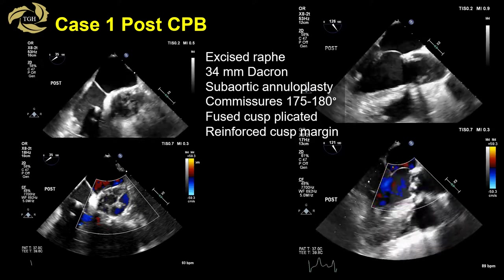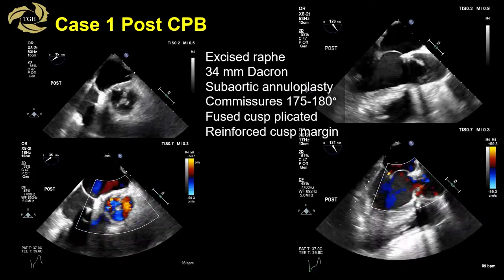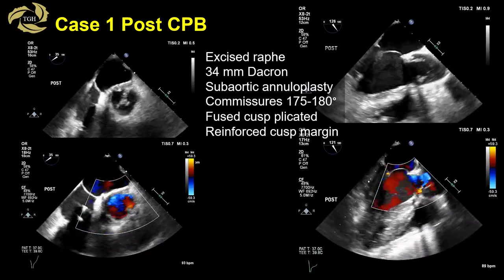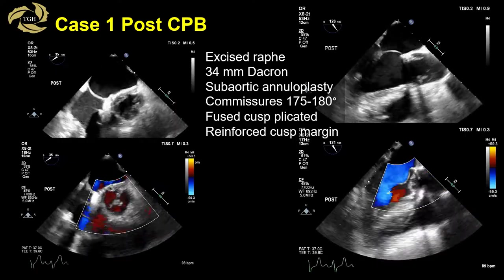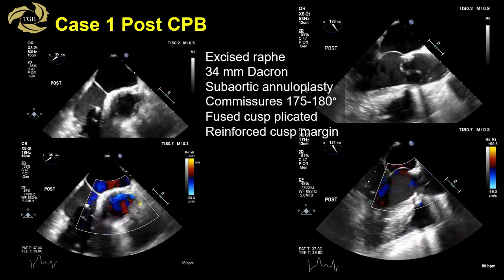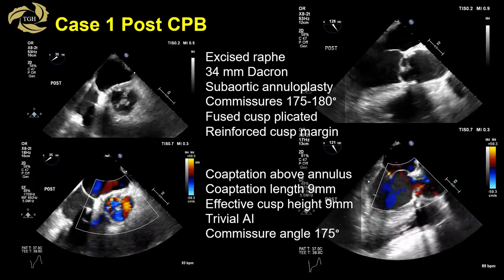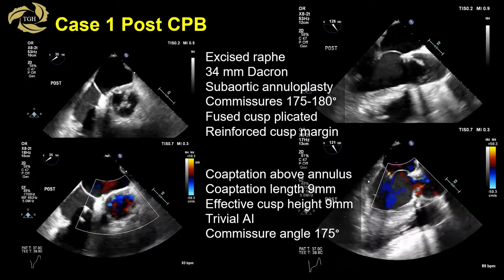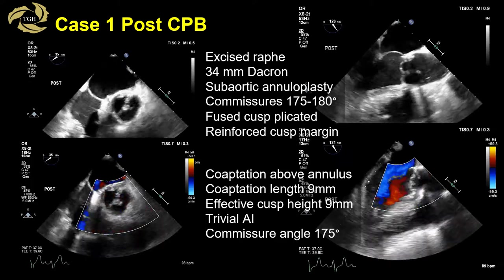The surgeon went ahead and spared the valve, which involved excising the raphae, implanting a 34 millimeter Dacron graft with sub-aortic annuloplasty, orientating the commissures close to 180 degrees, plicating the fused cusp, and reinforcing both cusp margins. The results show valve coaptation above the annulus, coaptation height of 9 millimeters, trivial AI, and a commissural angle close to 180 degrees.